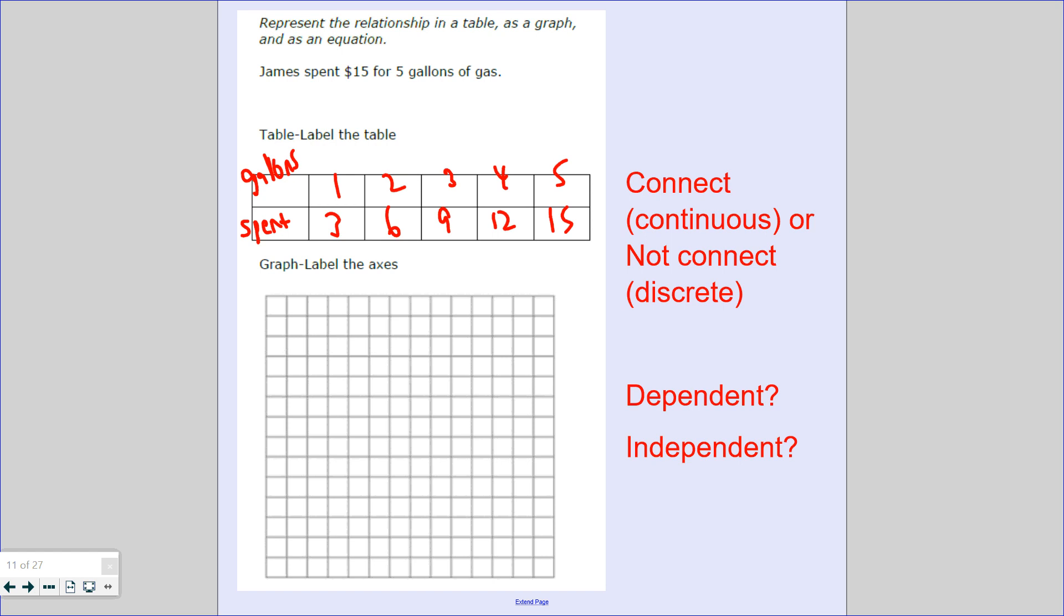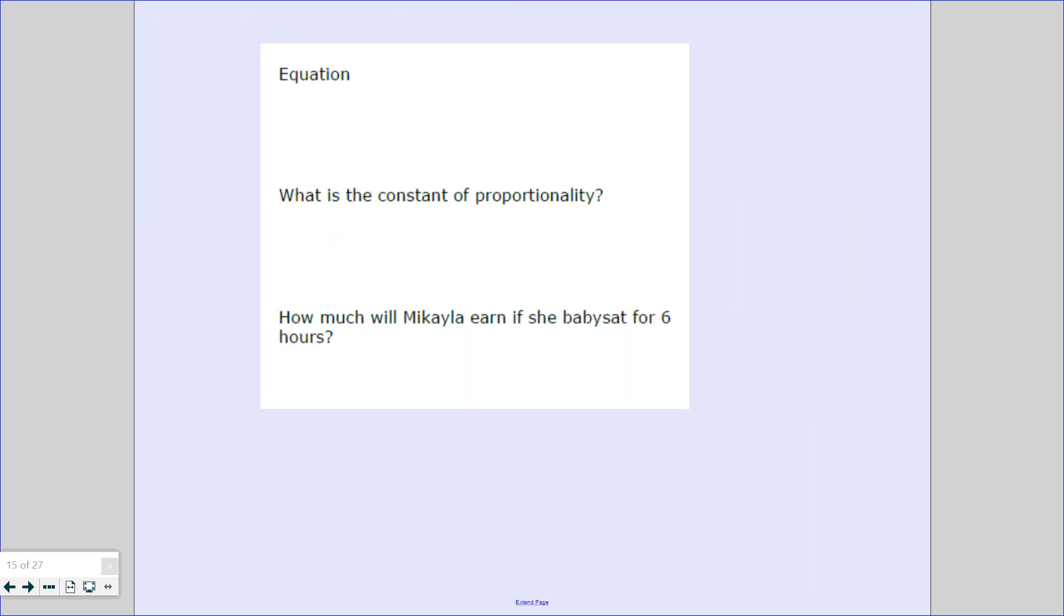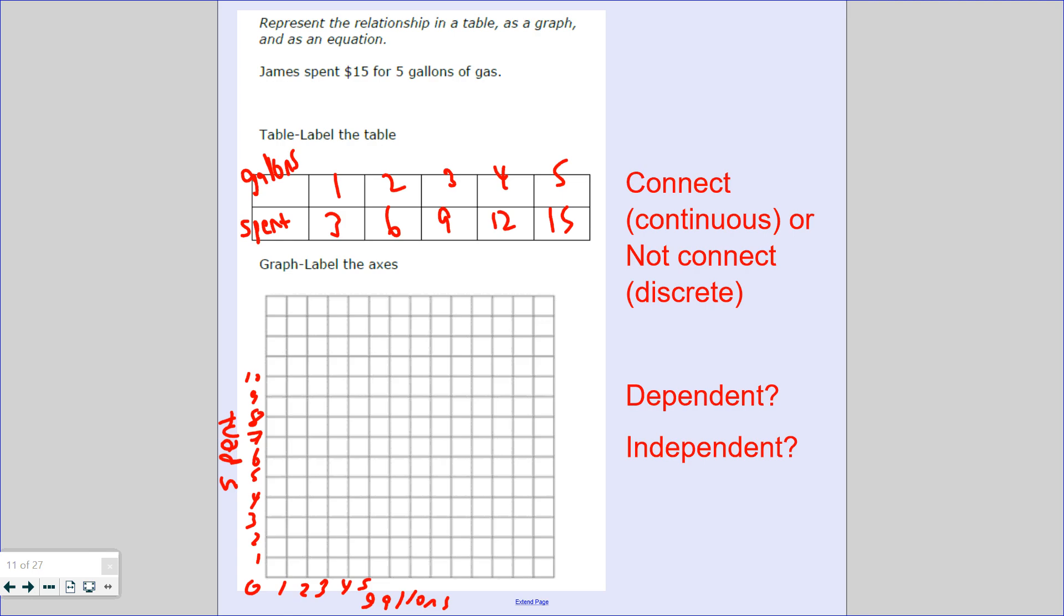So let's label the axis. So what depends on what? The amount spent, which is a dependent, depends on the number of gallons of gas. So 0, 1, 2, 3, 4, 5, and 1, 2, 3, 4, 5, 6, 7, 8, 9, $10. So with 1 gallon of gas he spent $3. 2 gallons of gas he spent $6. 3 gallons of gas he spent $9. 4 gallons would be $12. 5 would be $15.